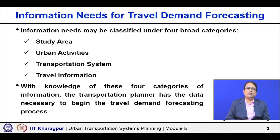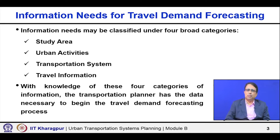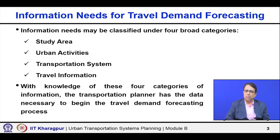The information needs may be classified under four broad categories: first, information related to study area; second, information related to urban activities; third, information related to transportation systems; and fourth, information related to travel. Once we have all these in hand, we can go ahead with the travel demand forecasting process using the four stages: trip generation, trip distribution, mode choice, and traffic assignment.